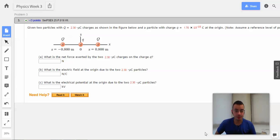Okay, problem 3. Given two particles with Q = 2.3 microcoulombs, charges as shown in the figure below, and a particle with charge q = 1.7 × 10^-18.